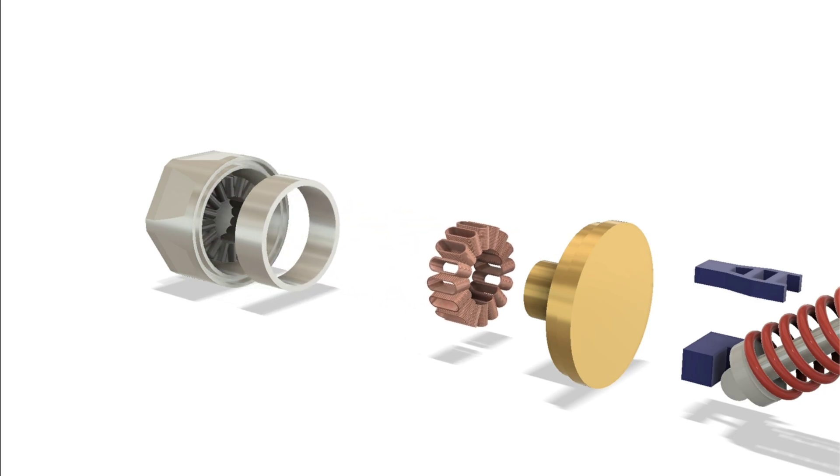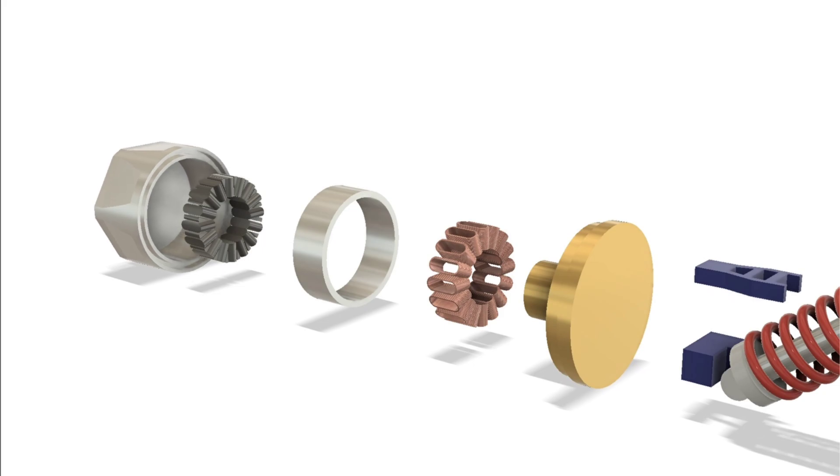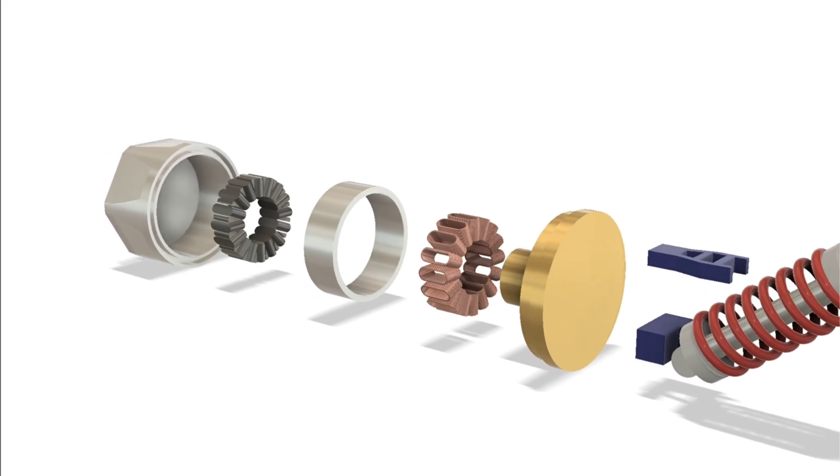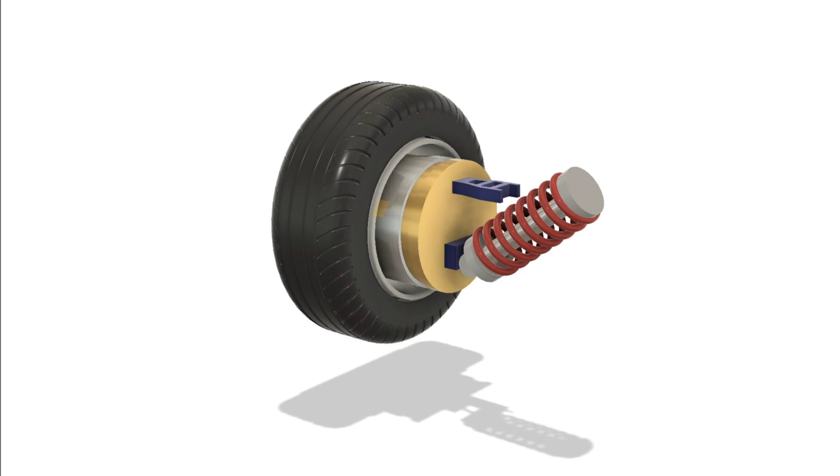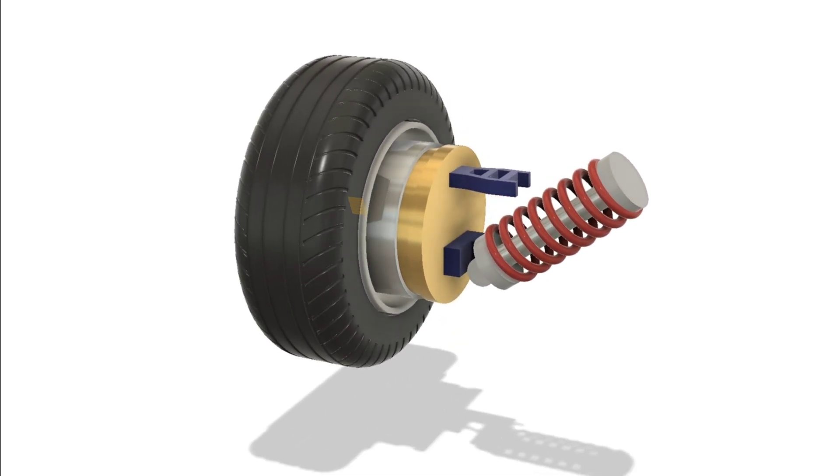An in-wheel motor, also known as a hub motor, is exactly what it sounds like: an electric motor placed directly inside the wheel hub. Instead of using a single central motor to drive all wheels, each wheel gets its own dedicated motor.